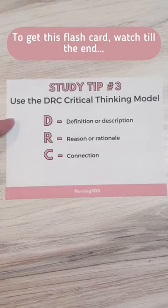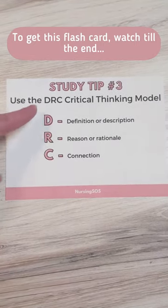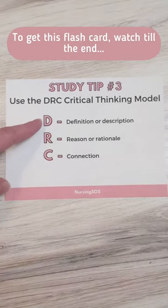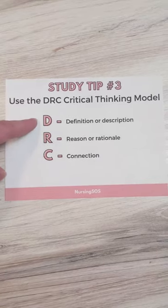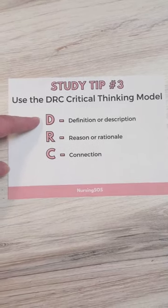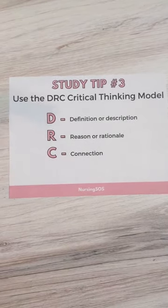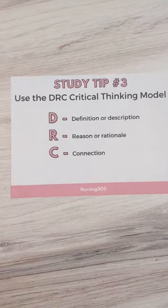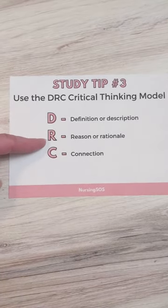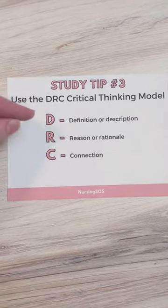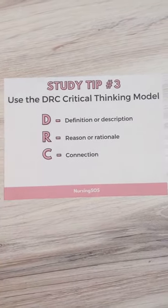Let's talk about the DRC critical thinking model in nursing school. D stands for definition or description — this is just a high-level overview of what is the definition or description of whatever you are learning about. And then R stands for reason or rationale: why does this happen?